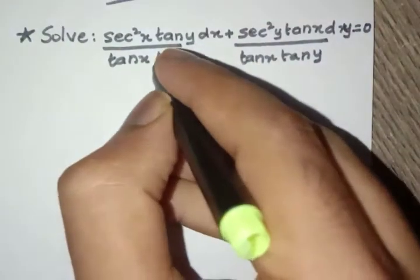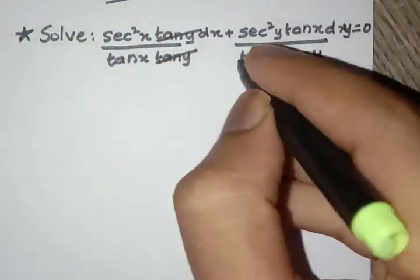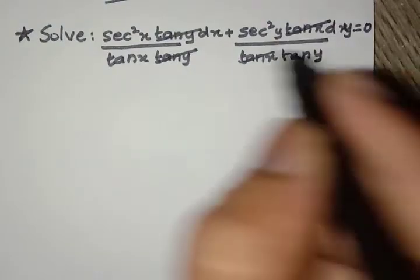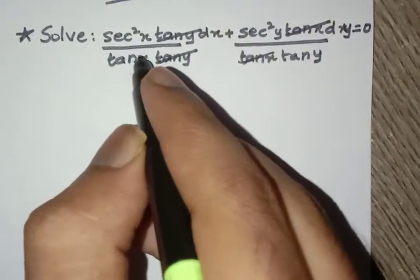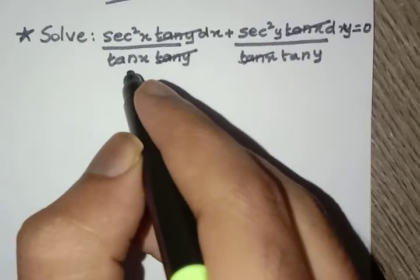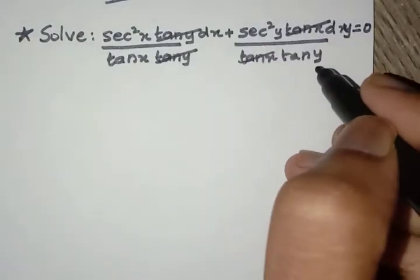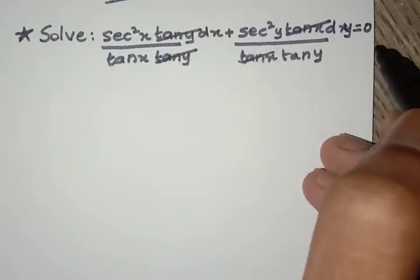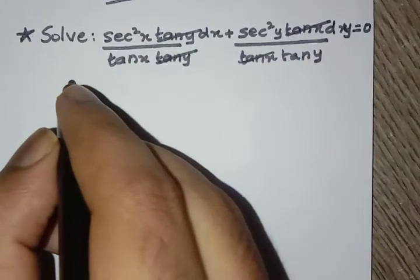We can cancel this out and here this out, so we have got only sec²x by tan x dx and sec²y by tan y dy.